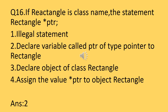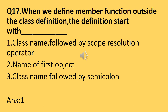The pointer variable ptr can access all class members of the Rectangle class. Question number seventeen: when we define a member function outside the class definition, the definition starts with what? The answer is: the class name followed by the scope resolution operator. If a member function is defined outside the class definition, it always starts with the class name followed by the scope resolution operator (::), which tells the compiler which particular class the member function belongs to.